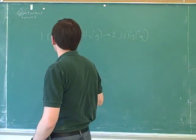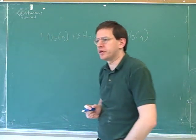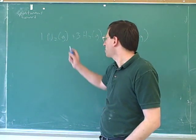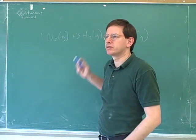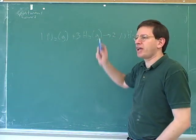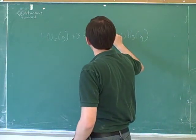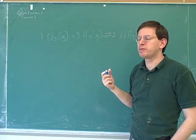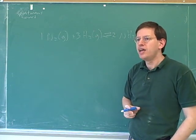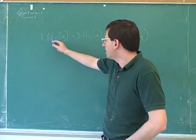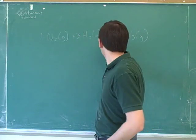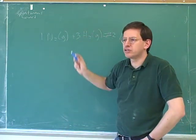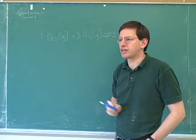Let's say that this reaction is spontaneous in the forward direction. What does that mean? Well, that means the net reaction is going to move forward. But that doesn't mean the reverse reaction isn't happening. If this is an equilibrium reaction, then generally both reactions will always be happening — always going both forward and reverse. Some nitrogen and hydrogen will always be colliding to form ammonia, and some ammonia will simultaneously be dissociating to form nitrogen and hydrogen.